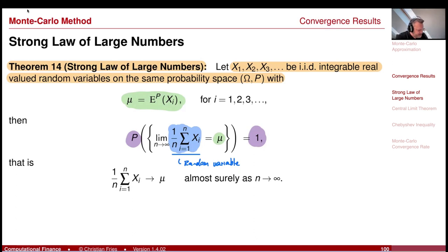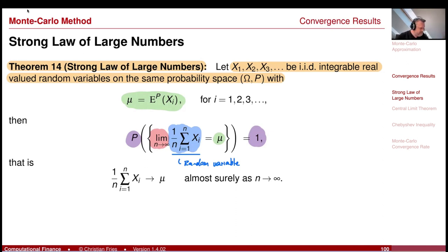Perhaps the biggest drawback is that we have the limit n to infinity here. I would like to use this method to approximate the expectation with a finite n — maybe n is large, n is 1 million sample points — but I would like to approximate it with a finite n, and here we only have a result in the limit.